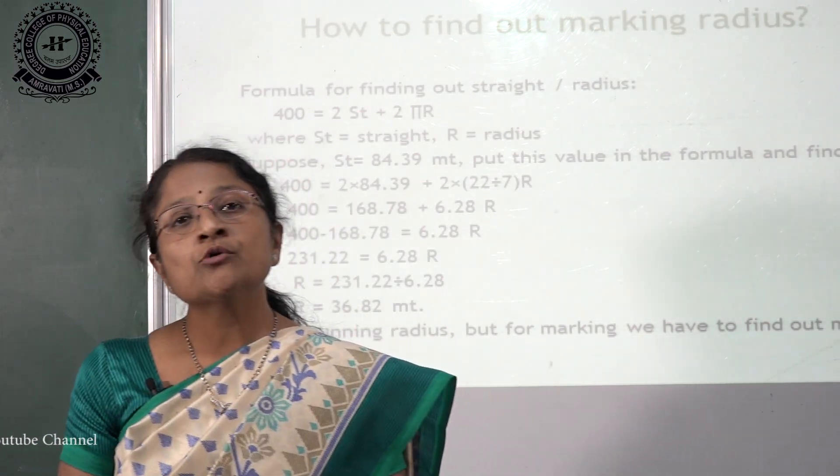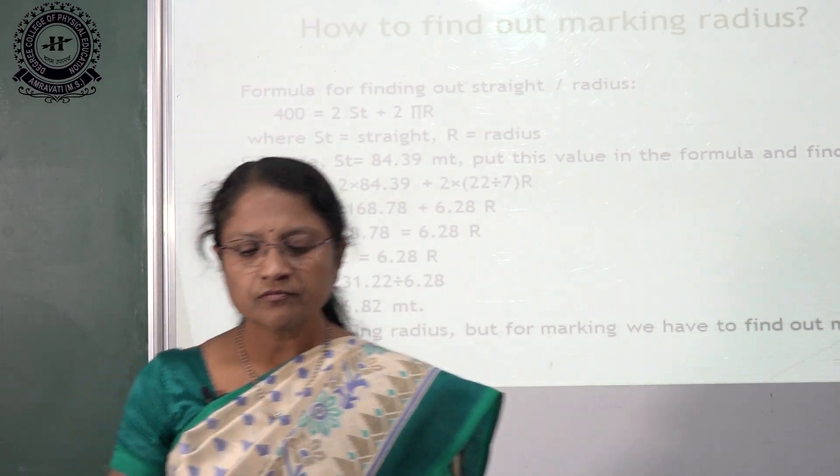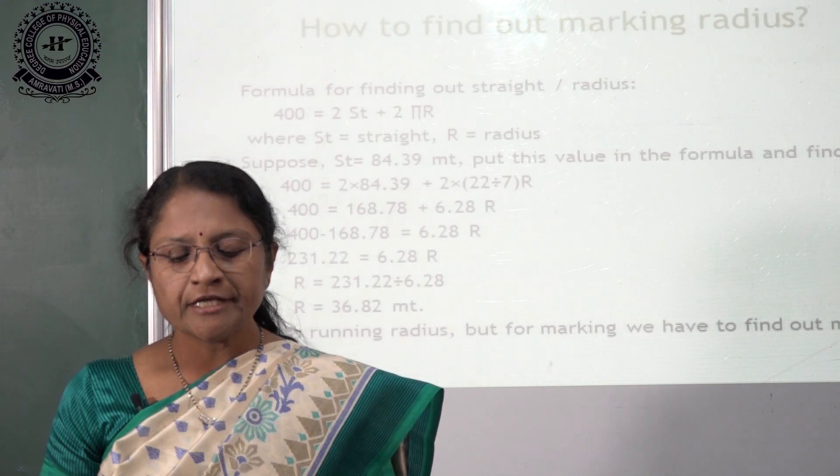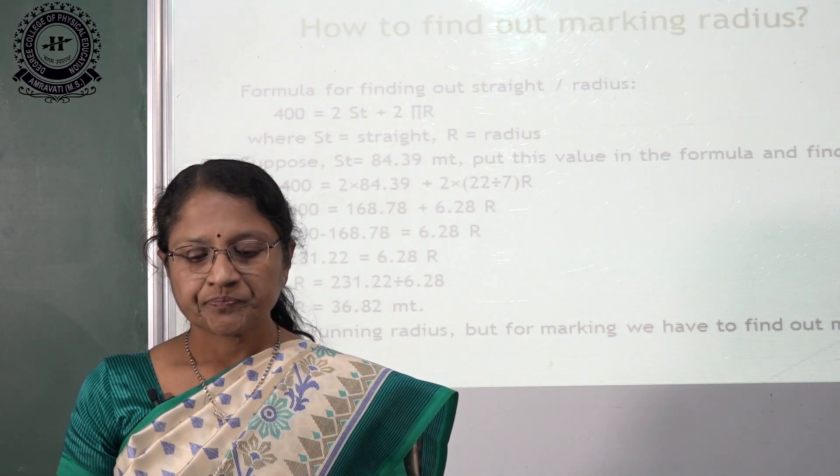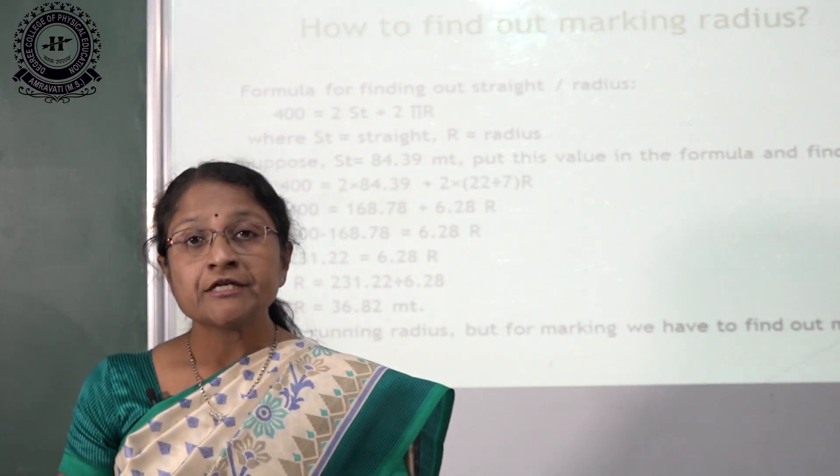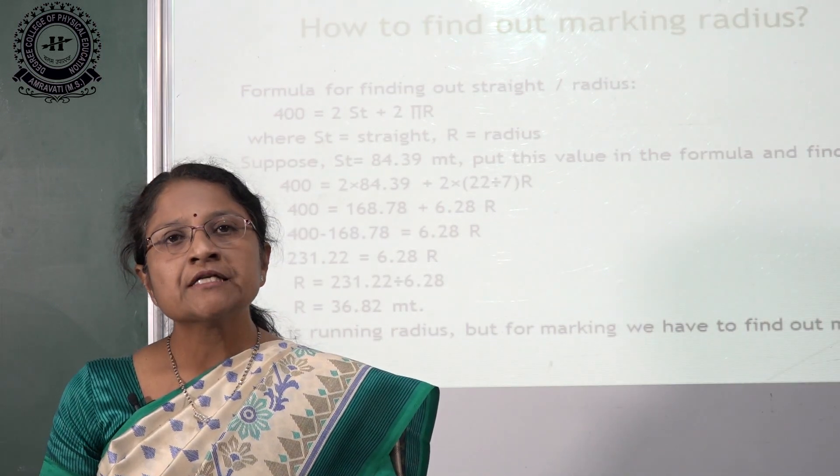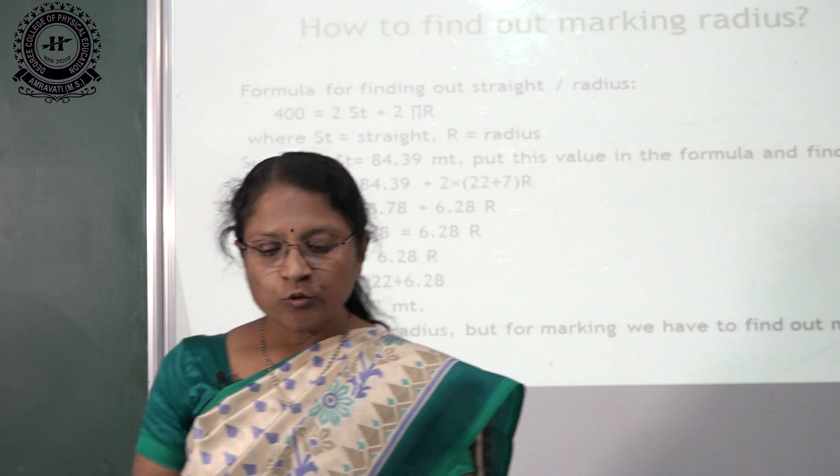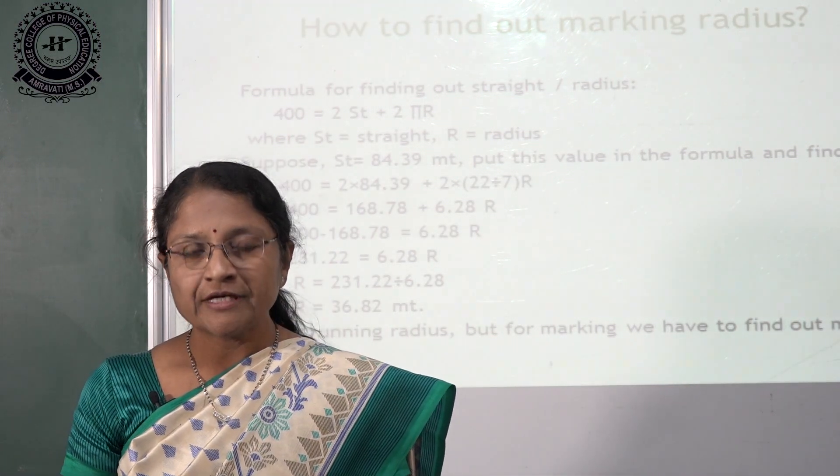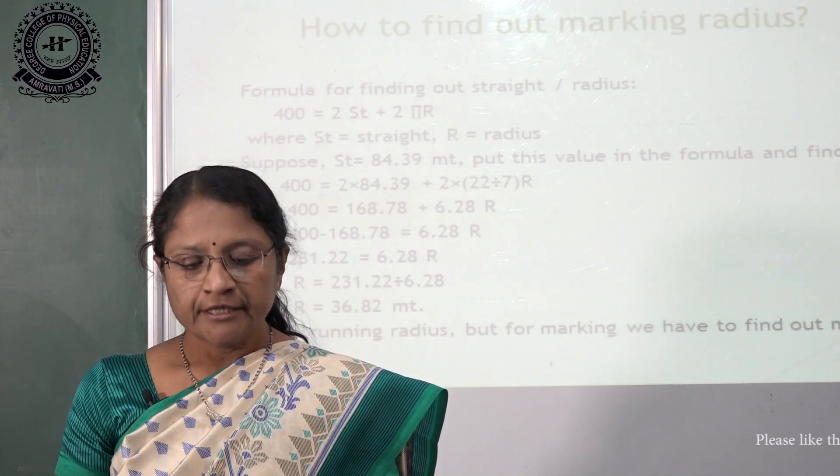Now suppose value of the straight is 84.39 meters. For finding out radius, put this value 84.39 in the formula. So 400 equals 2 into 84.39 plus 2πr. Value of π is 22 by 7. By putting all these values in the formula, we find out value of radius is 36.82 meters.